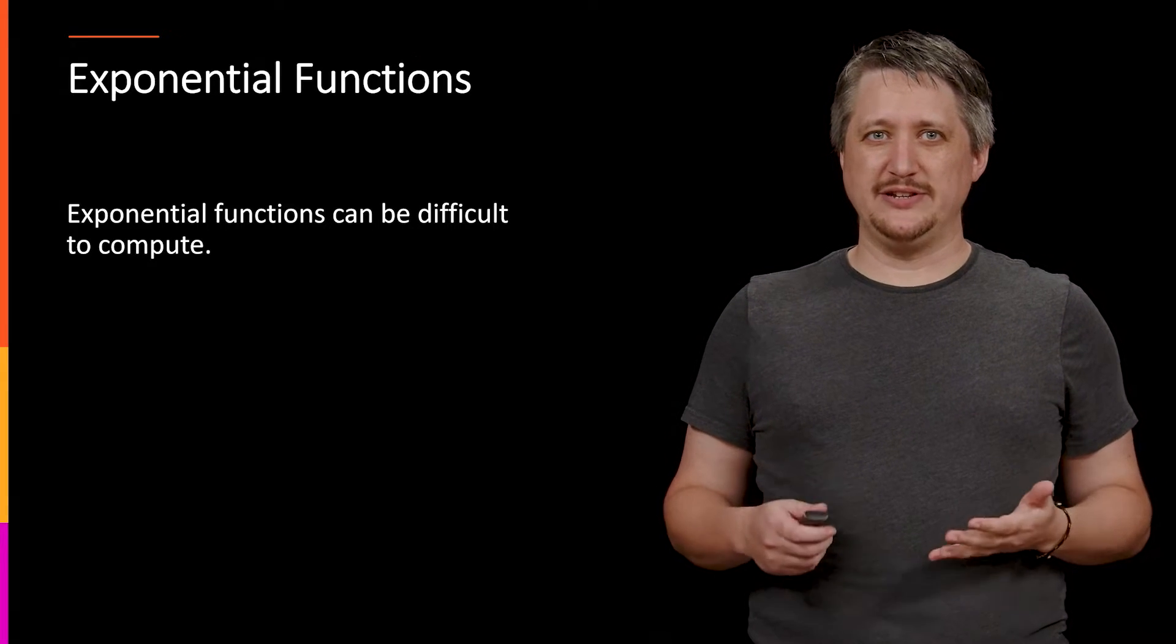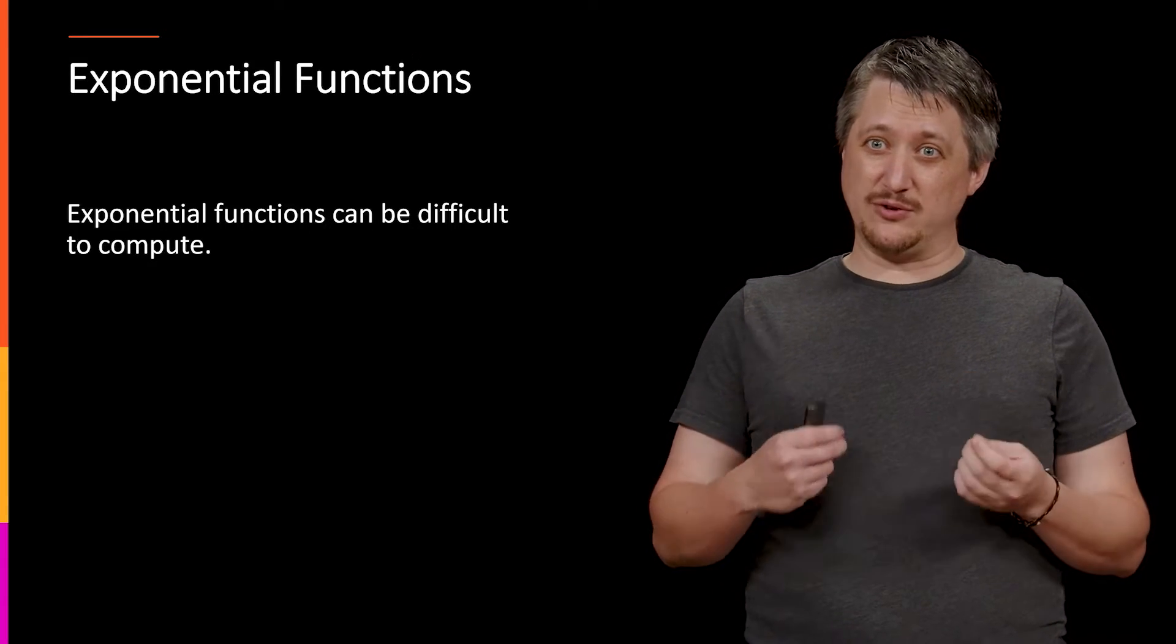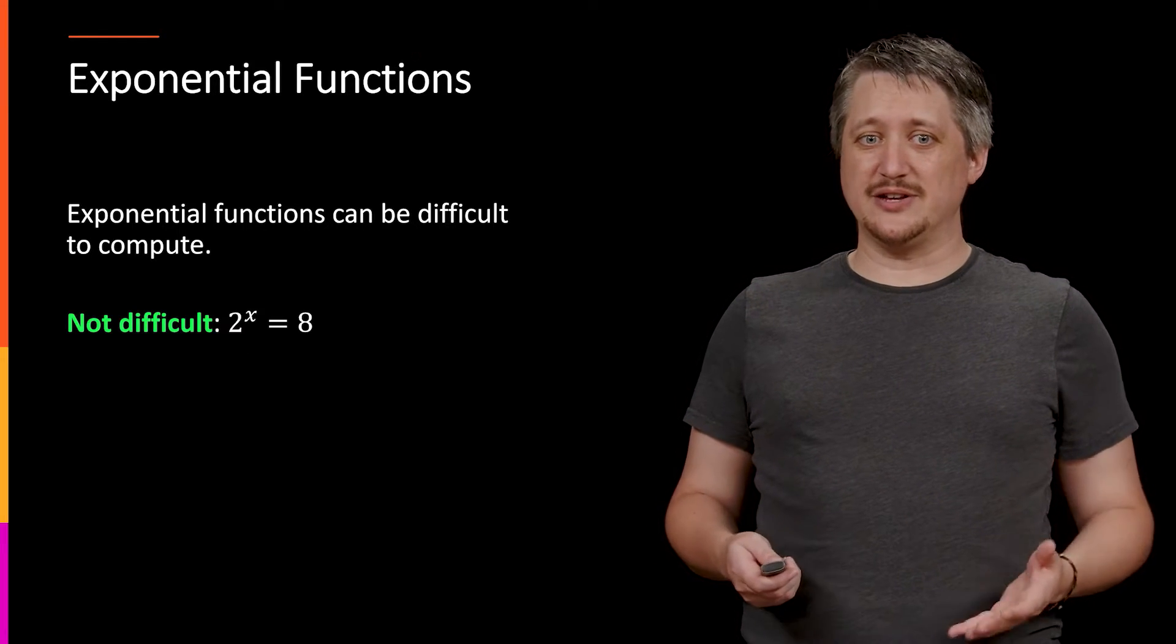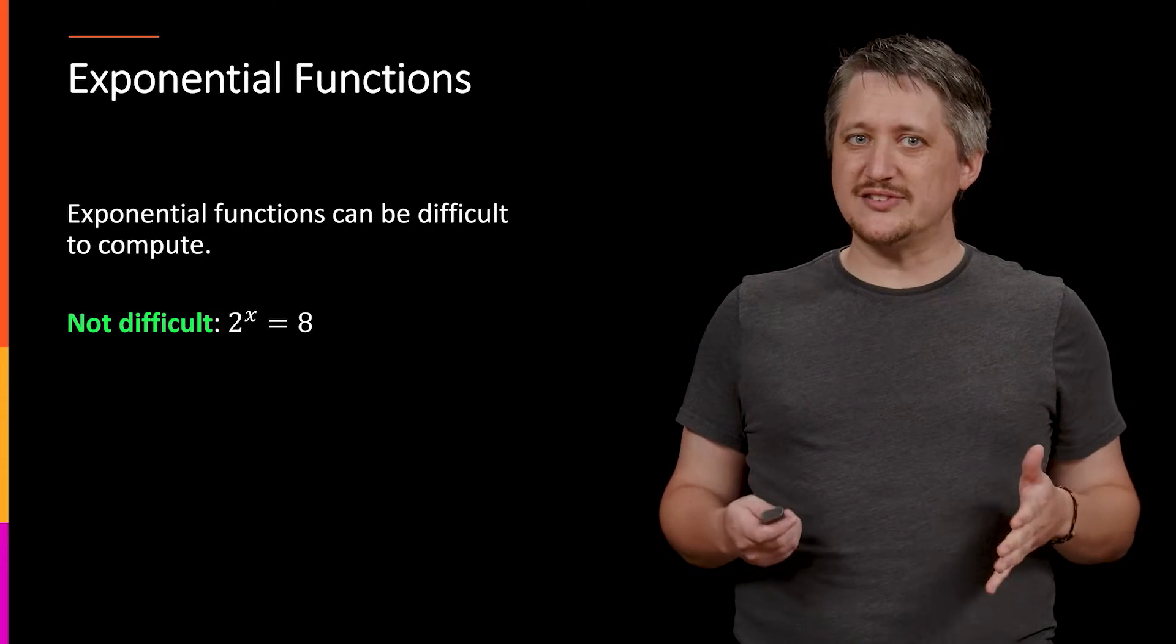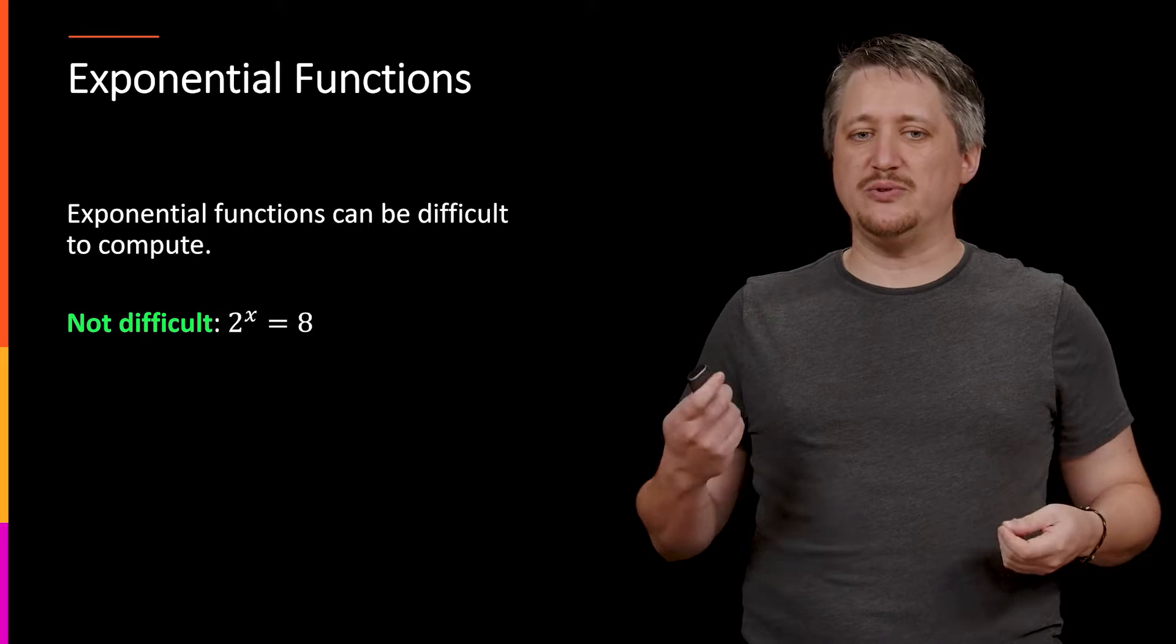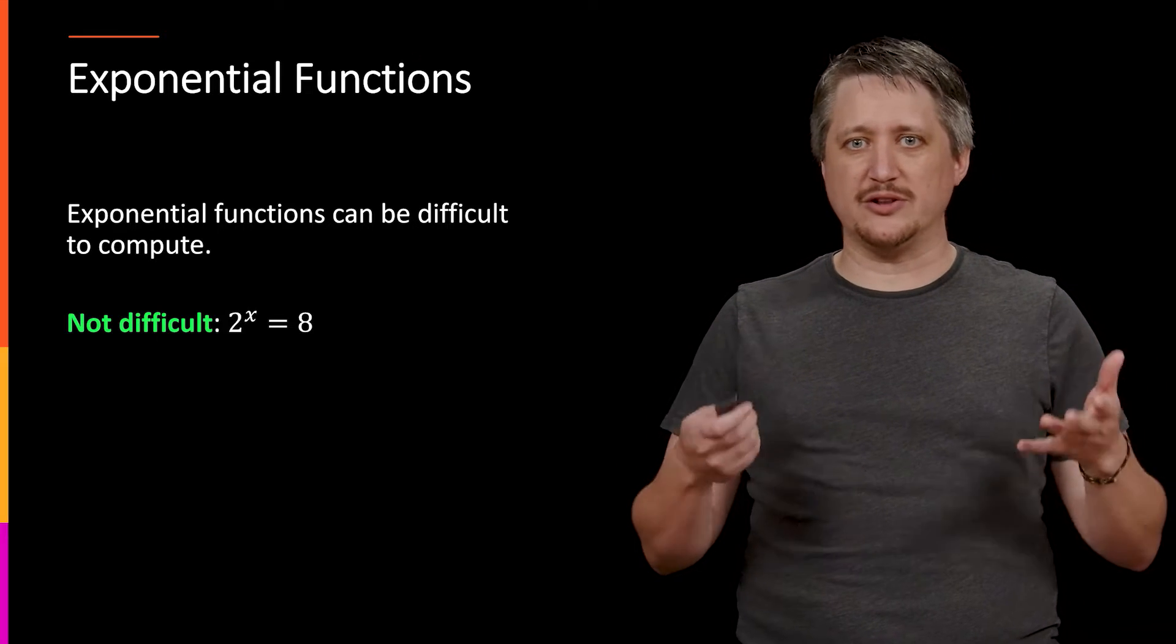Exponential functions can be pretty difficult to compute or unravel. There are situations where it's nice. For example, if you have something like 2^x = 8, this isn't that difficult - we can figure out that 8 is 2^3, so x is 3.